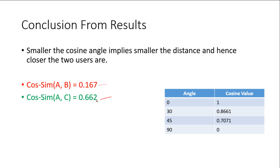I have shown this phenomena in table on right hand side. In our results we can see A is more closer to C than B. So greater similarity means smaller angle and users are very similar in liking or disliking the things.